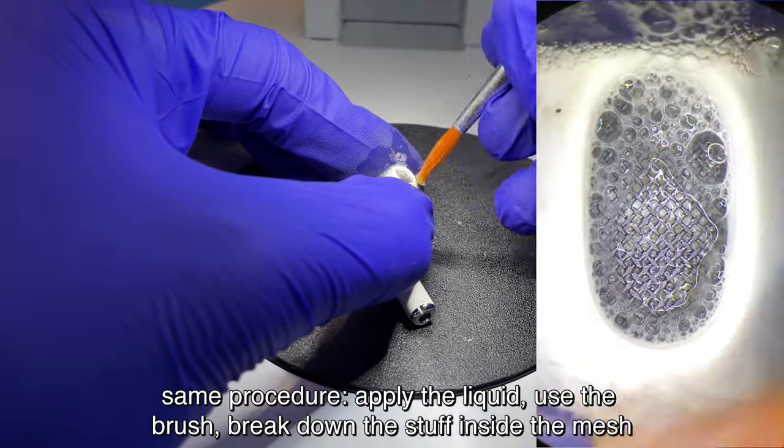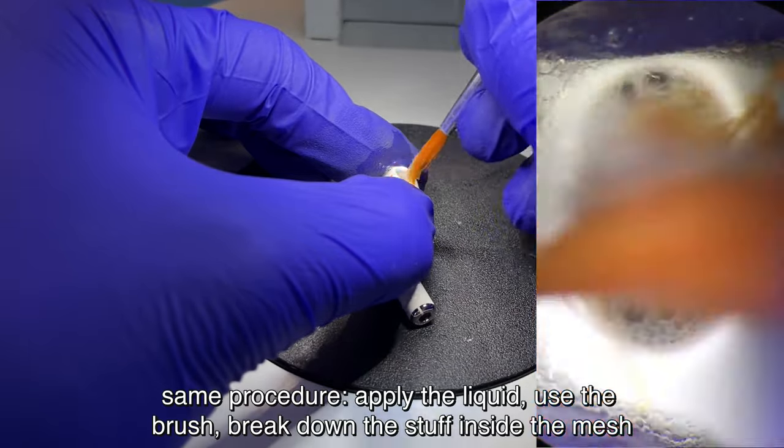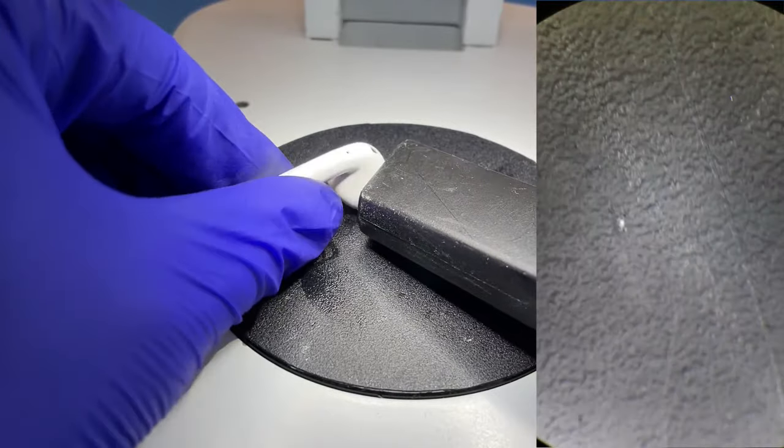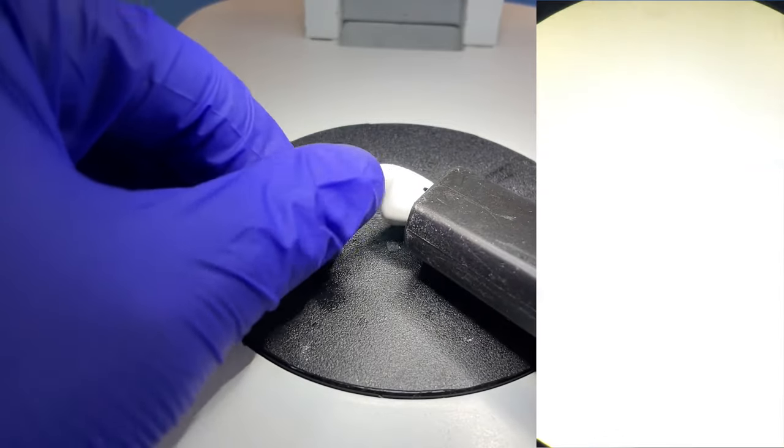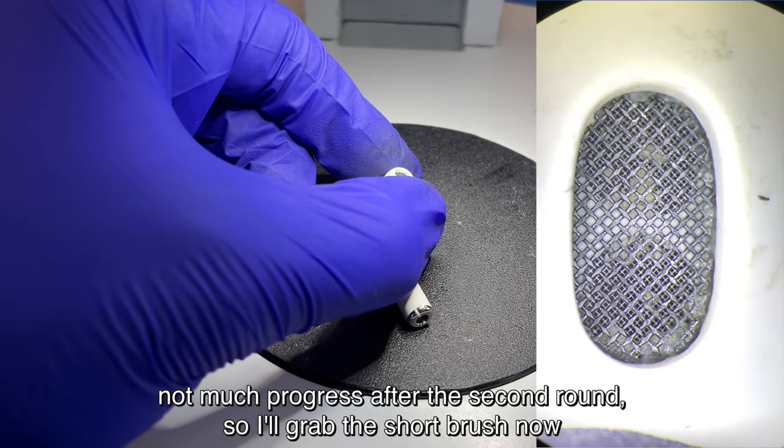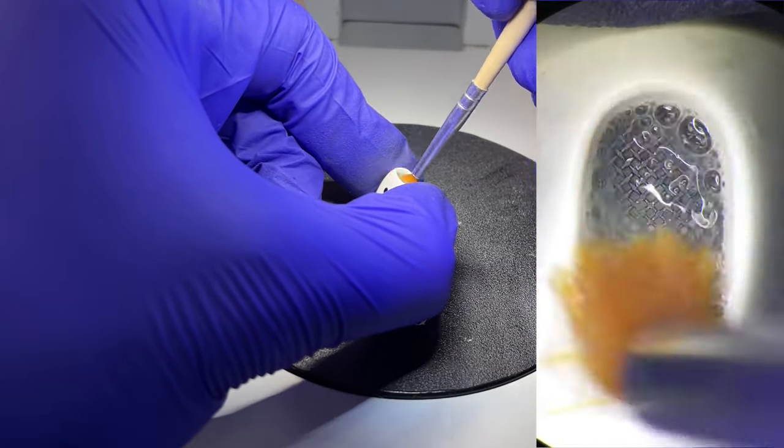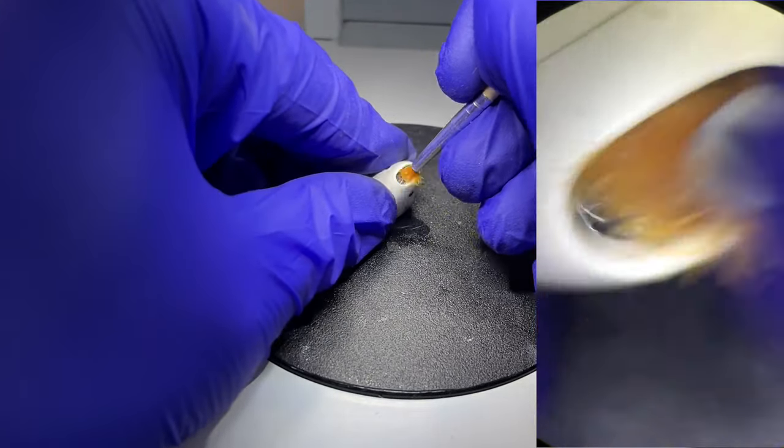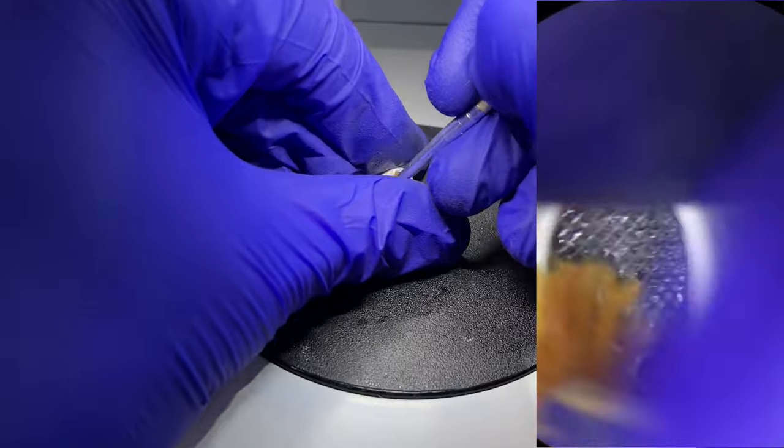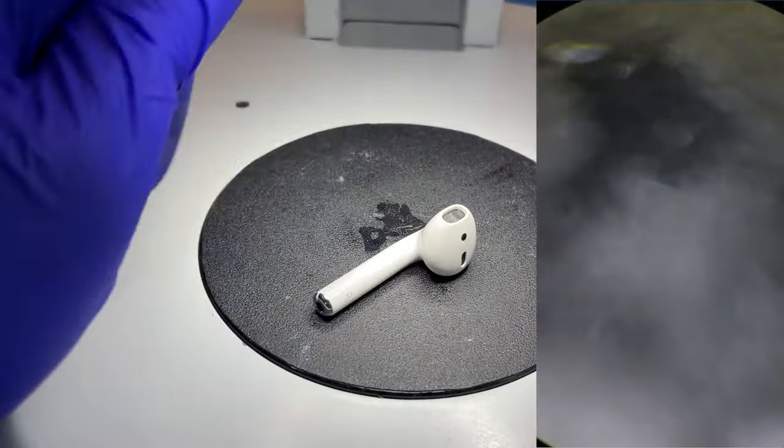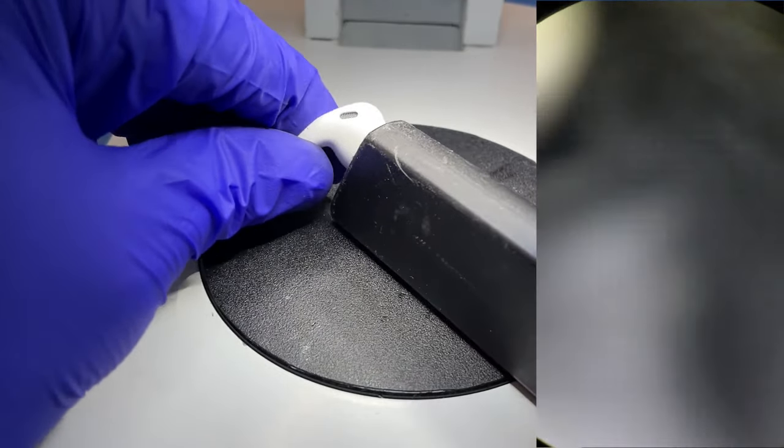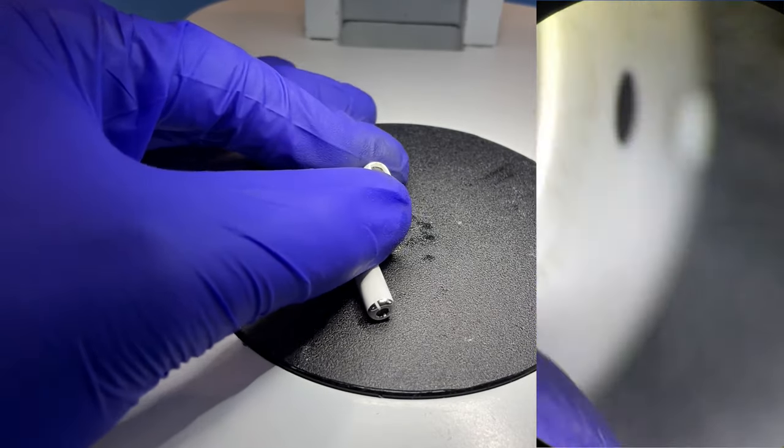Okay, let's give it a few more rounds. Same procedure: apply the liquid, use the brush, break down the stuff inside the mesh, and vacuum it out. Not much progress after the second round, so I'll grab the short brush now. Now it's much better.